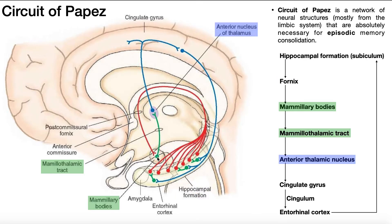The cell bodies located in the mammillary bodies have axons that project superiorly, and these axons belong to the mammothalamic tract. These axons then synapse with cell bodies in the anterior nucleus of the thalamus. The entire thalamus is not involved — only the anterior nucleus. We know this is involved because lesions to the anterior nucleus of the thalamus actually cause spontaneous and inappropriate crying and laughing.